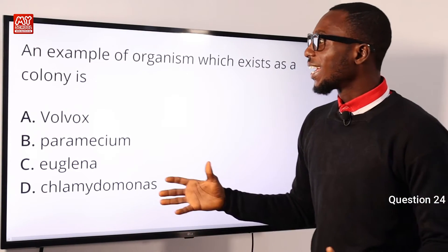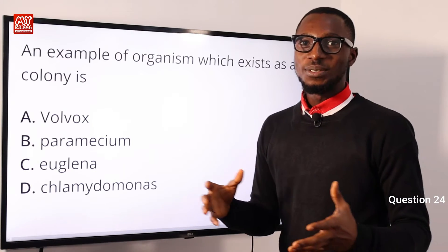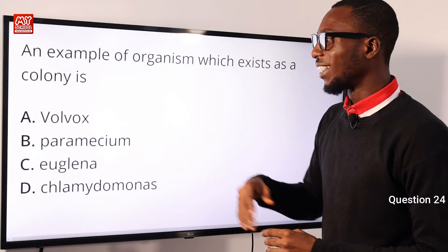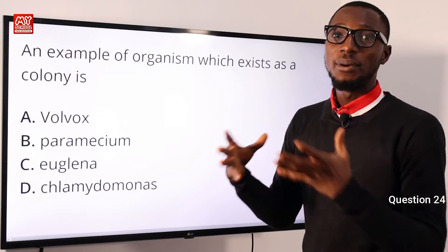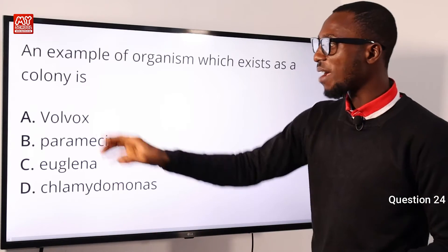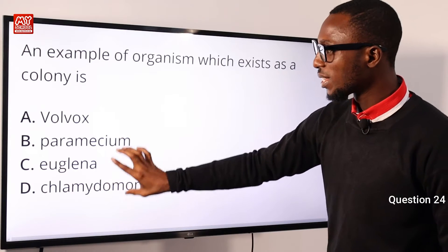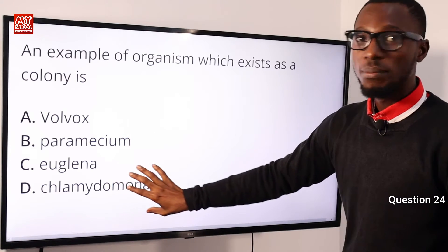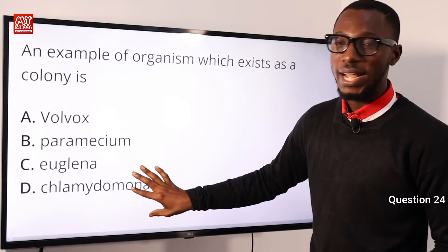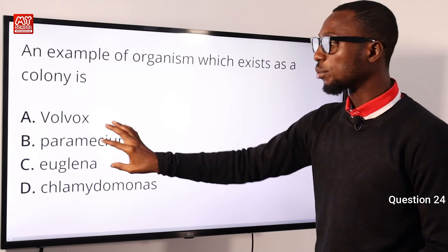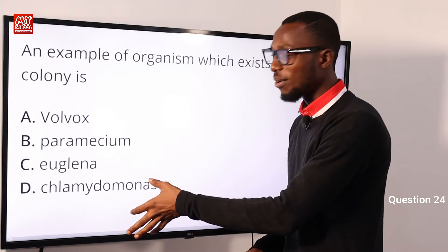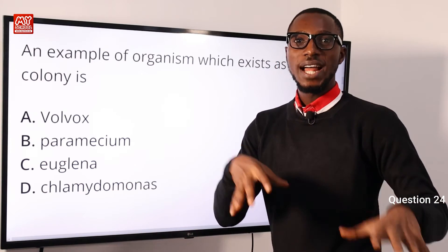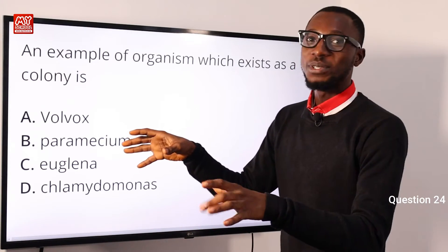Question 24: An example of an organism which exists as a colony is Volvox. It belongs to kingdom Plantae, phylum Thallophyta. Spirogyra exists as a filament, while Volvox exists as a colony. Paramecium and Chlamydomonas belong to kingdom Protista. Chlamydomonas is a protophyte, belonging to phylum Protophyta. Paramecium is an animal-like protist, while Euglena exhibits both plant-like and animal-like characteristics. The correct option is A for Volvox.